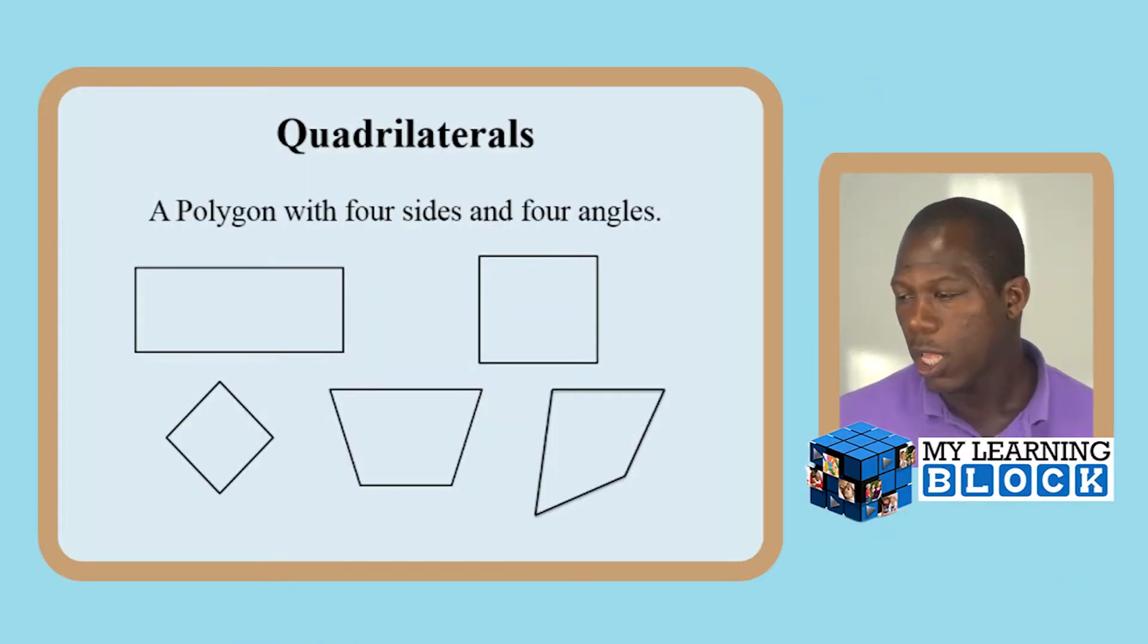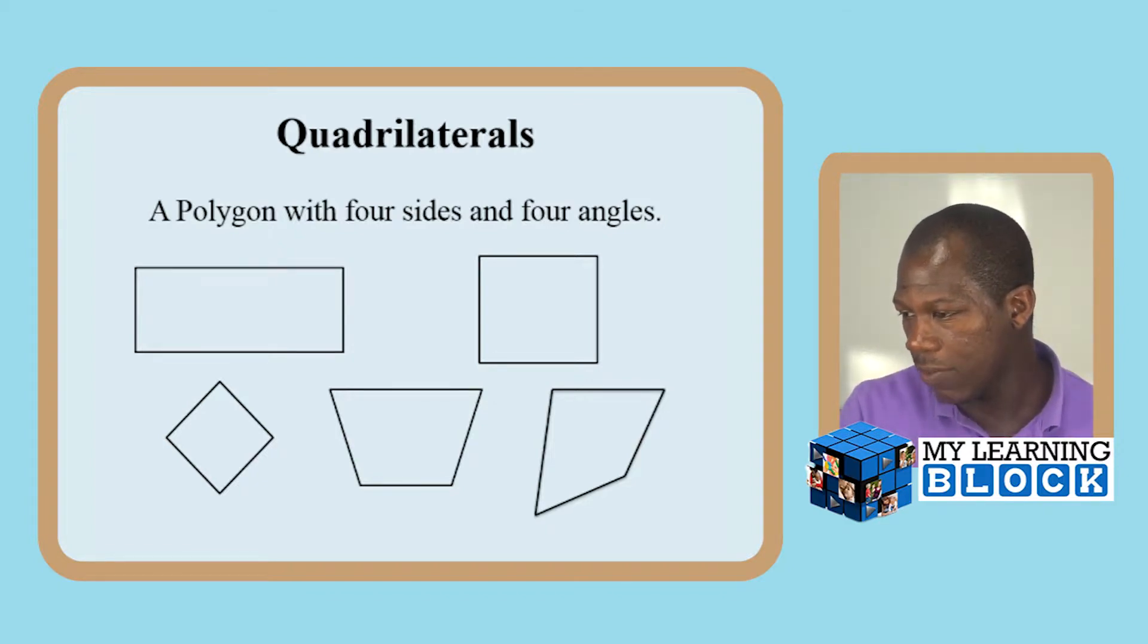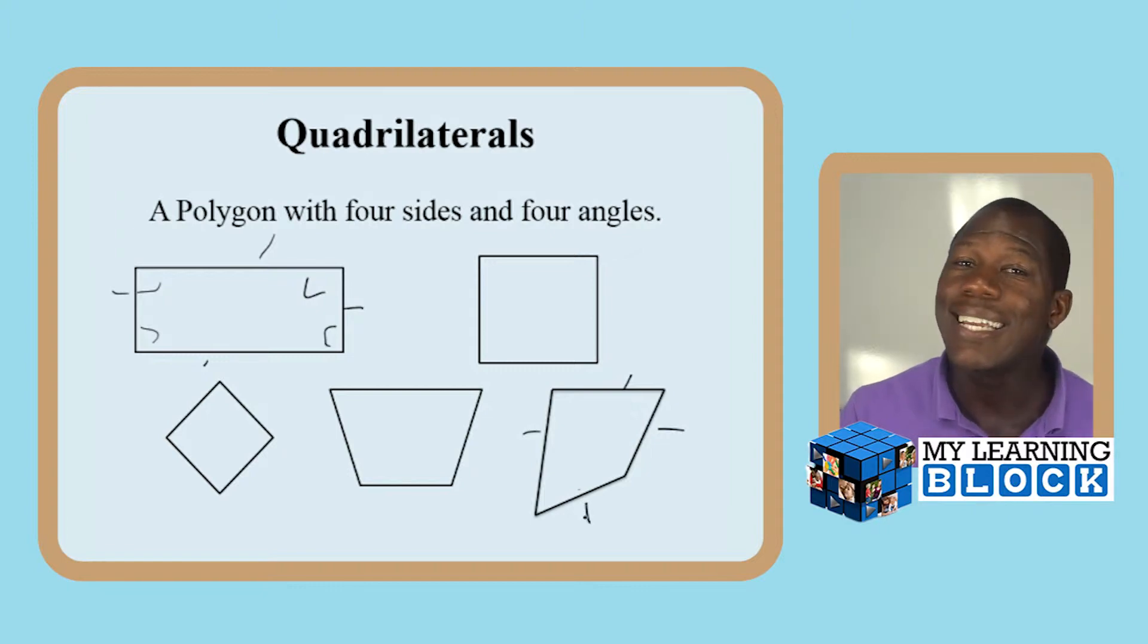A quadrilateral is, as you can see, a polygon with four sides and four angles. If you look at all of these polygons, they all have four sides and four angles. And they all do, trust me. Even this little weird one has one, two, three, four sides and four angles.